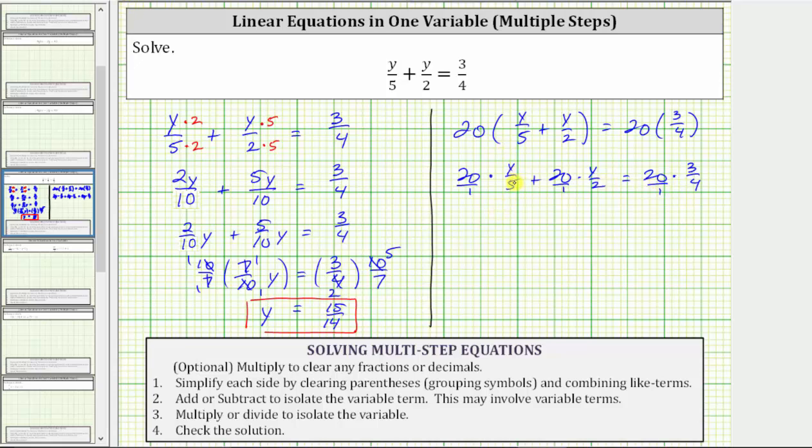Simplifying before multiplying, there's one 5 in 5 and four 5s in 20. We now just have 4 times y, which is 4y. Plus, again simplifying, there's one 2 in 2 and ten 2s in 20. We have 10 times y, which is 10y.